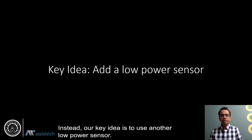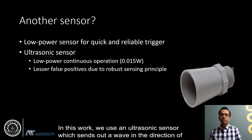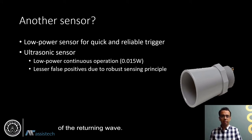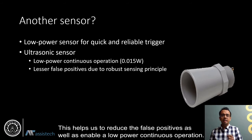The idea is to use another low power sensor. In this work, we use an ultrasonic sensor which sends out a wave in the direction of walking and calculates the distance of the nearest obstacle based on the time of flight of the returning wave. This helps us to reduce the false positives as well as enable a low power continuous operation.